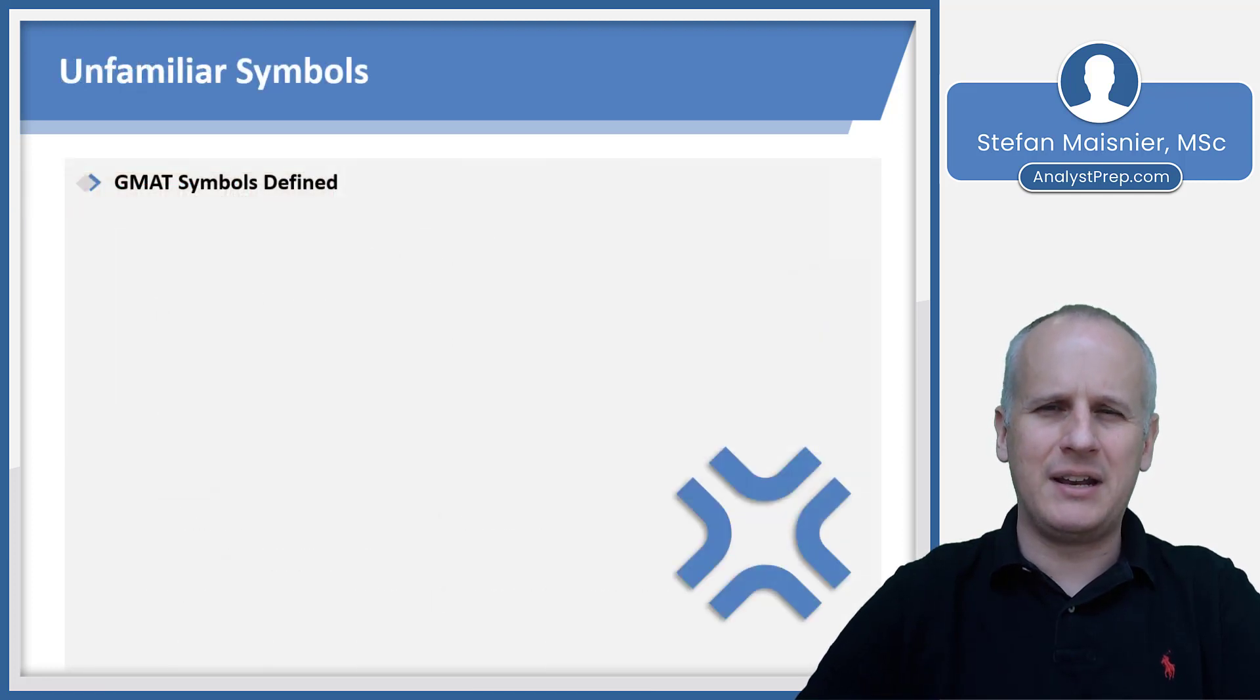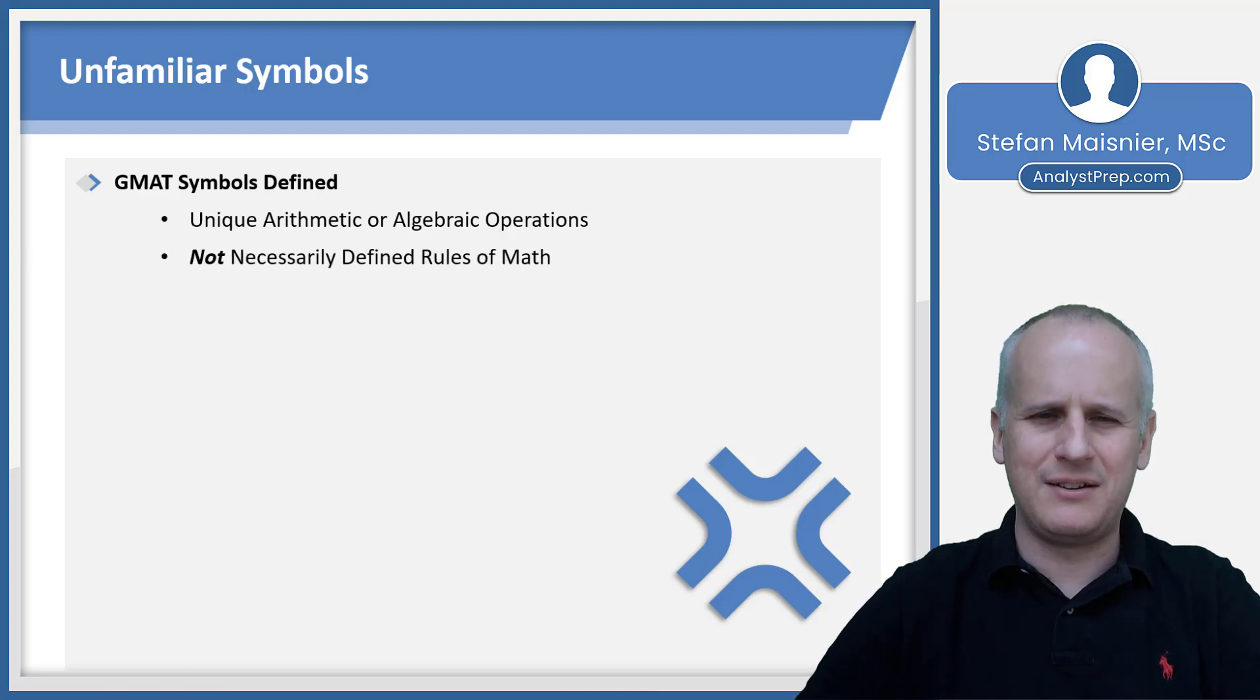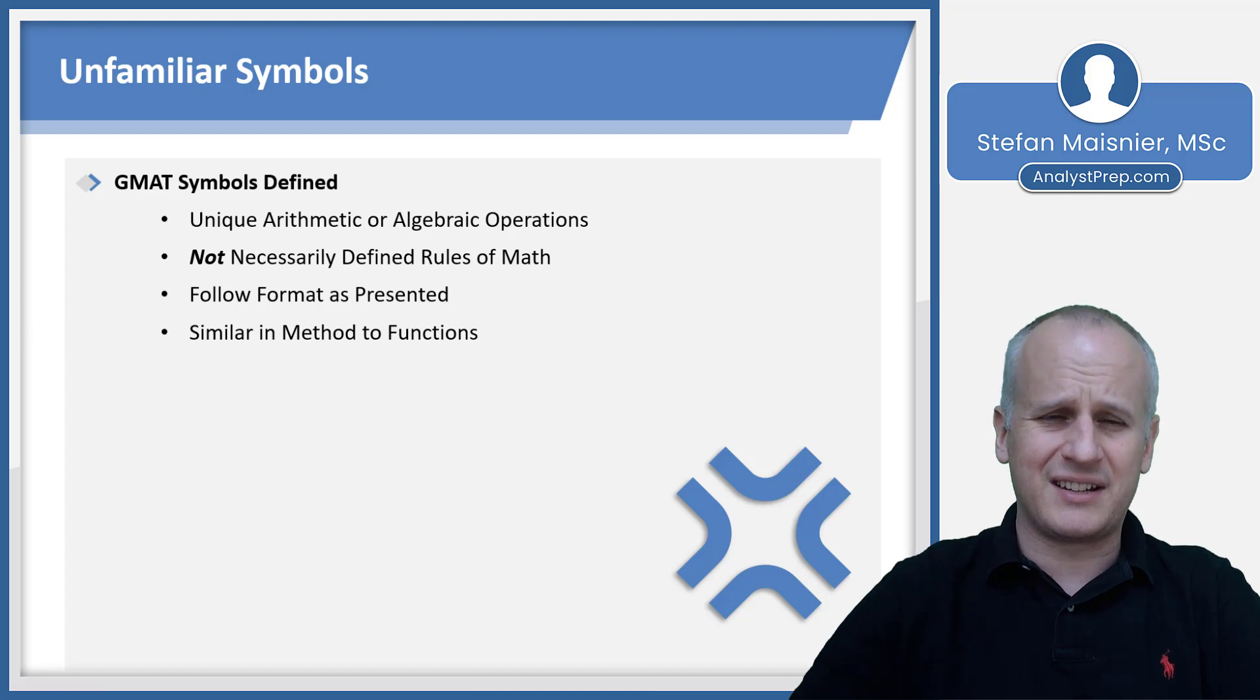Now let's talk about another way that functions can be executed on the exam, and that's basically by using a symbol instead of the standard function notation. A GMAT symbol is going to present a unique arithmetic or algebraic operation, but they are not necessarily predefined rules of math. You don't have to be looking at the problem and going, well, I don't remember what a weird symbol means from my third grade or seventh grade or 10th grade math. It's actually being defined for you in the moment. So if it's unfamiliar, that's by intent, and you just have to follow the format as the unfamiliar symbol is presented.